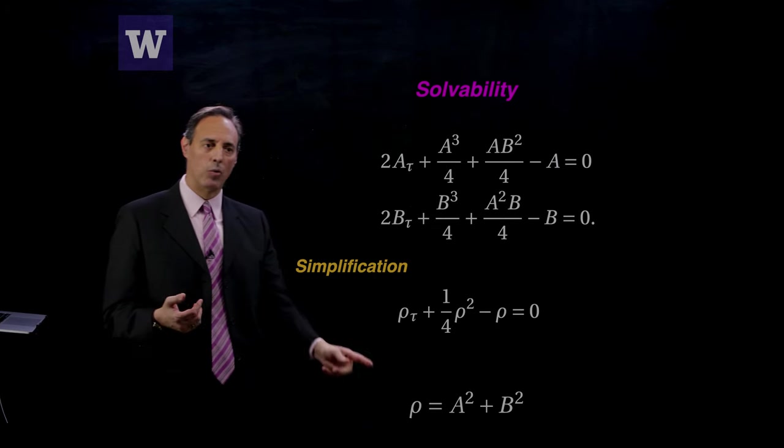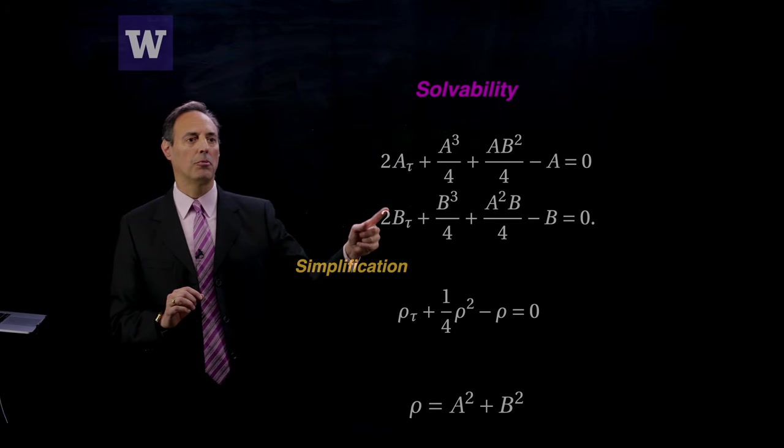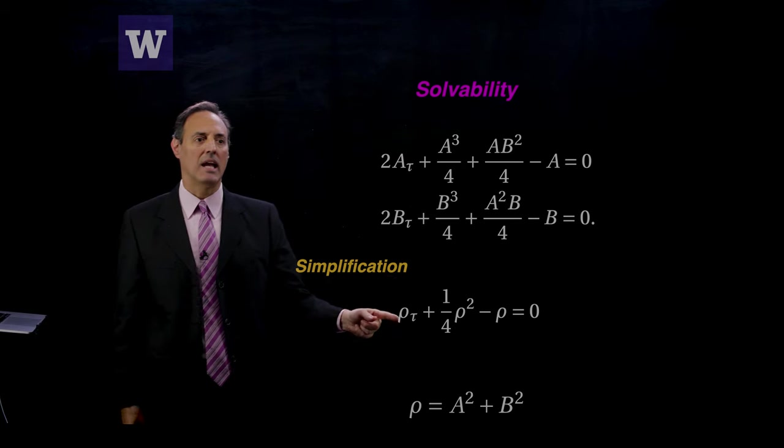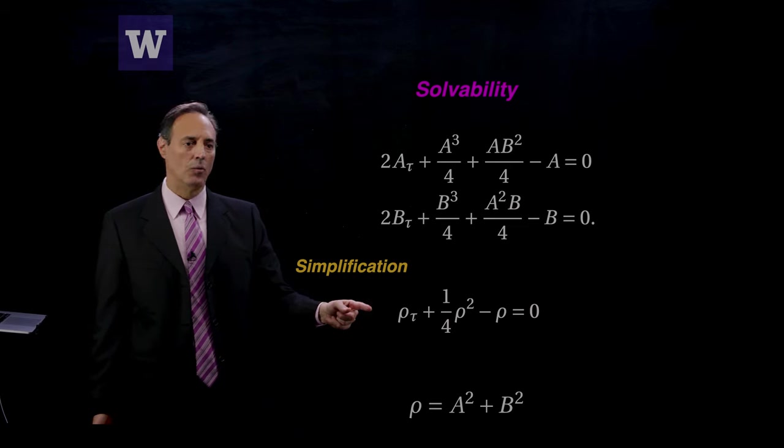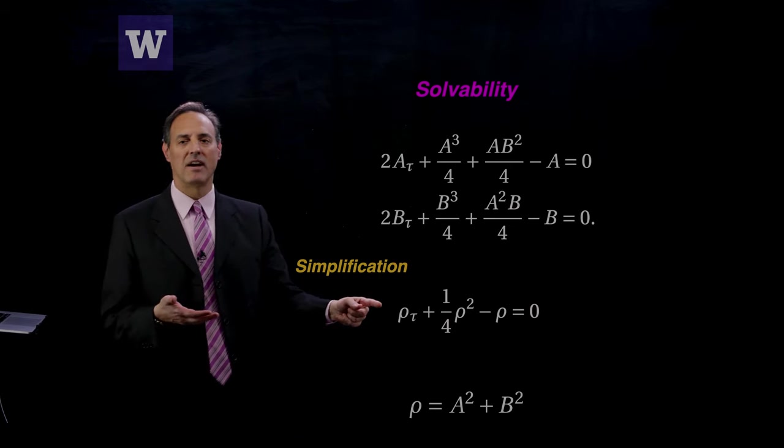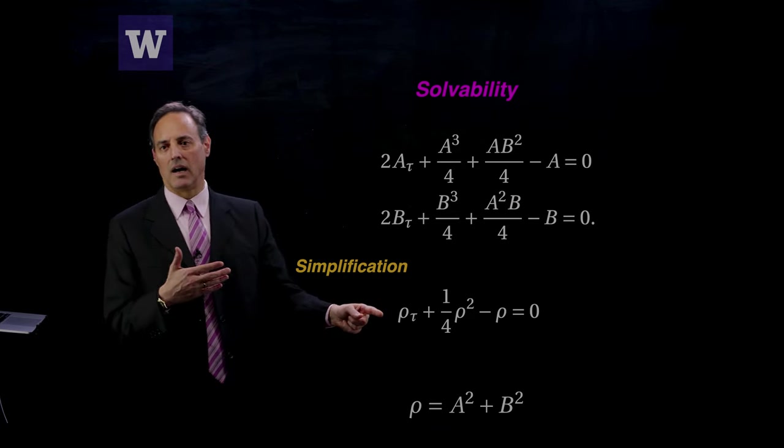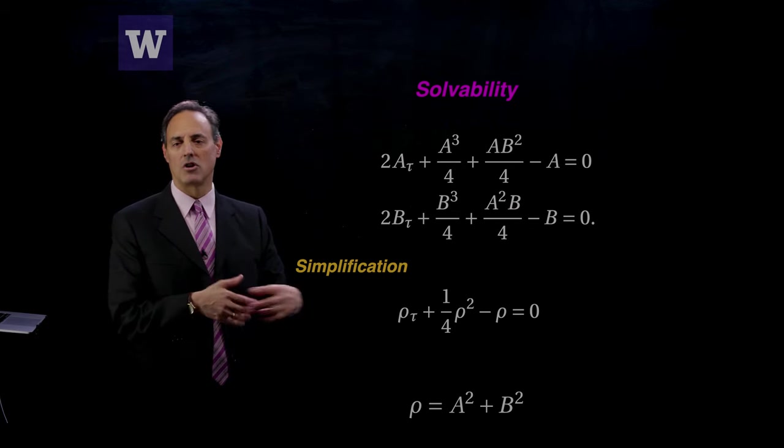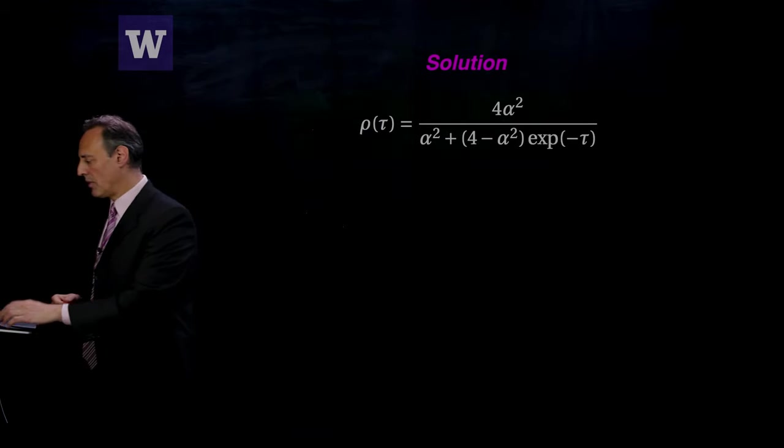This simplifies greatly. If I take rho to be defined as a^2 + b^2, then I can multiply the top equation by a, bottom equation by b, add them together, and I get this first order nonlinear ODE, which is pretty easy to solve. You can use the integrating factor method from differential equations. In most differential equations books, this is like one of the first day or two.